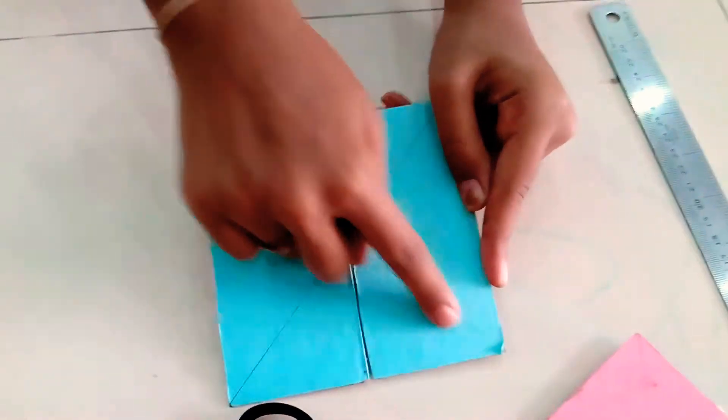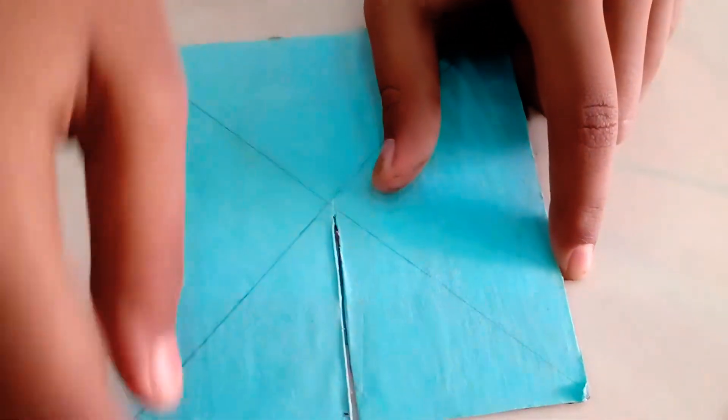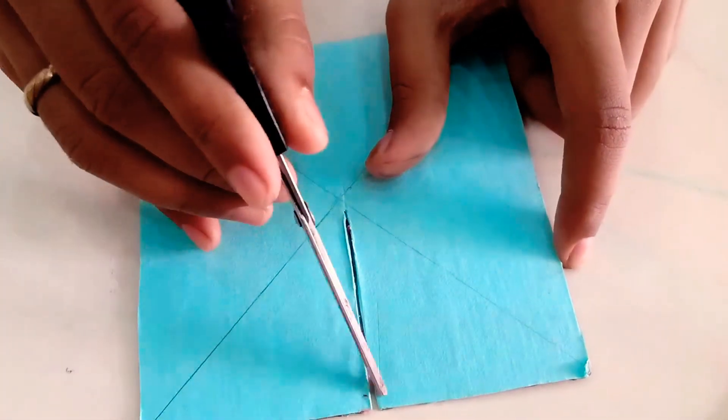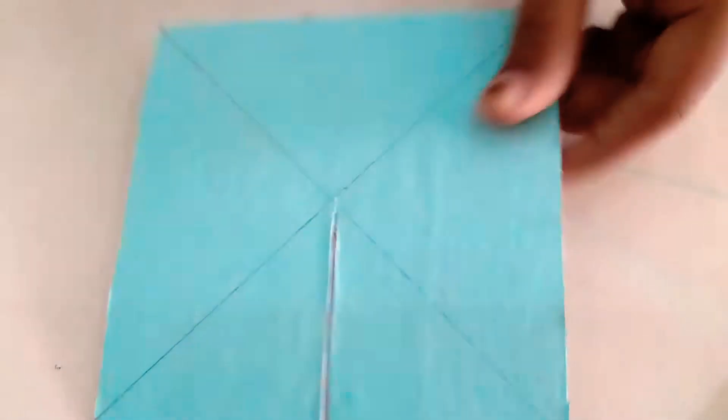First, in the first cardboard, you have to draw the diagonals to get the center point. Once you get the center point, you're going to cut a slit till the center point. Then you're going to take the next cardboard.